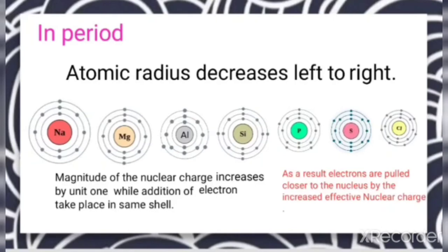Because of this reason, in a period the group 1 element has the largest atomic radius, while the atomic radius is smaller compared to the element of the 17th group in the same period. Now let us compare these values in a tabular form.